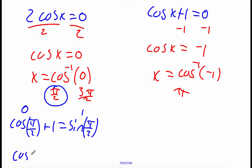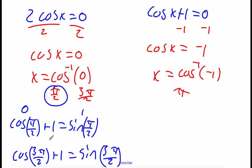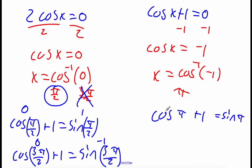Checking 3 pi over 2: cosine of 3 pi over 2 plus 1 equals sine of 3 pi over 2. Cosine of 3 pi over 2 is 0, sine of 3 pi over 2 is negative 1. Left-hand side gives us 1, right-hand side gives us negative 1 — those don't match up, so 3 pi over 2 is not actually a solution. Checking pi: cosine of pi plus 1 equals sine of pi. Cosine of pi is negative 1 and sine of pi is 0, so left-hand side adds up to 0 and right-hand side is 0. So pi over 2 and pi work, but 3 pi over 2 did not.